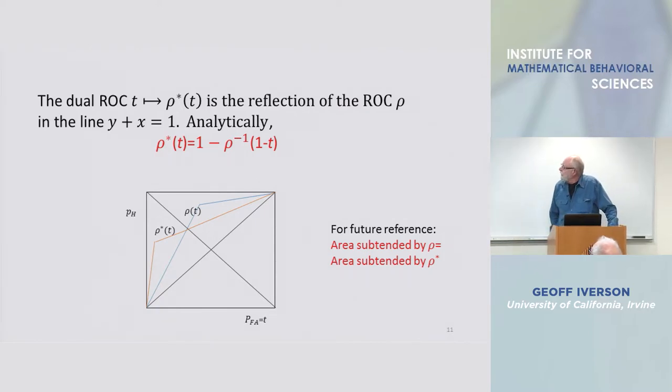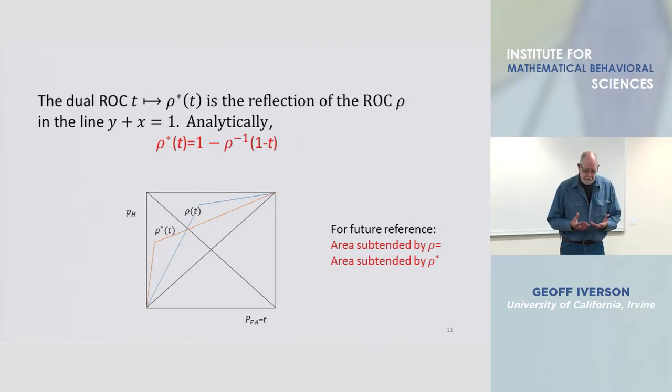is to notice that this is the construction of rho star, involves a composition of reflections. You start off with a function rho.